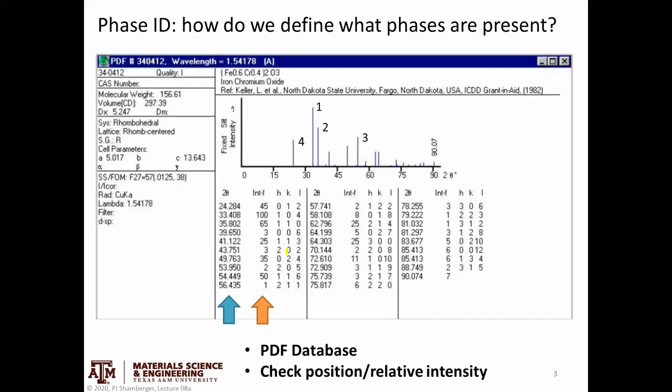So how do we determine what phases are present? Traditionally, we use what's called a PDF database. This does not mean Adobe Acrobat PDF. This is the powder diffraction file. This is a format that was adopted very early on, way back when we didn't have computers. These were originally cataloged in very large books. I'll show you an example in a bit. Basically, it gives you a peak position and a relative intensity.